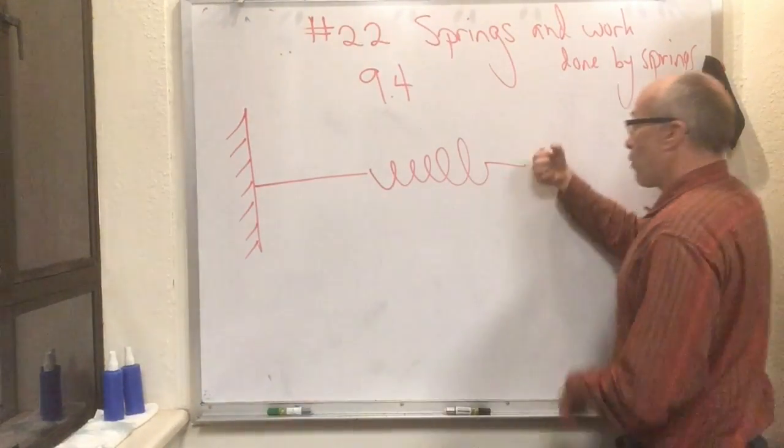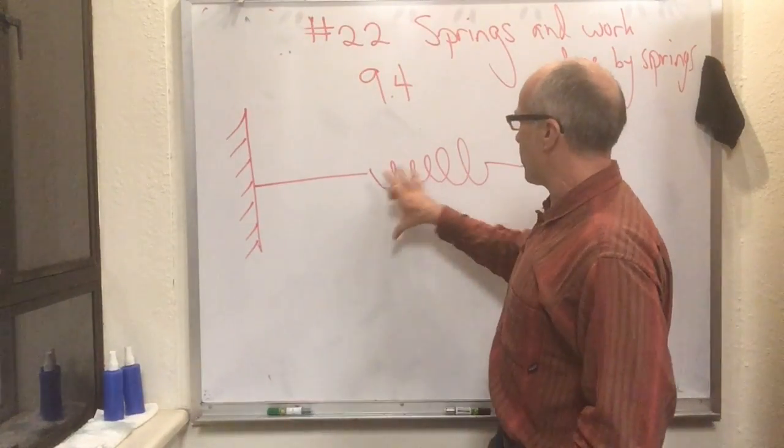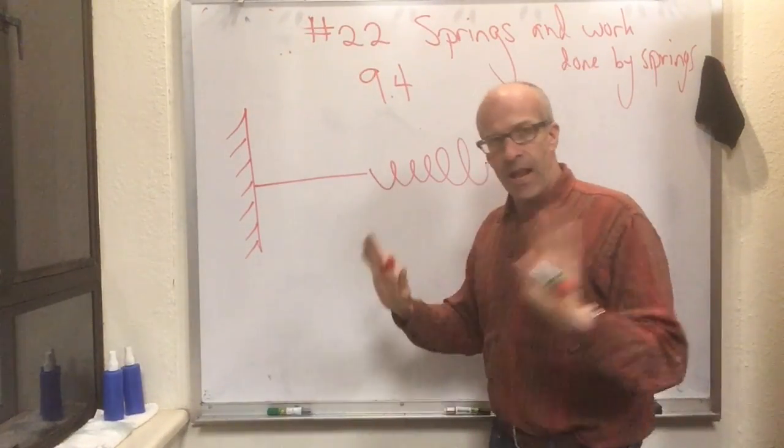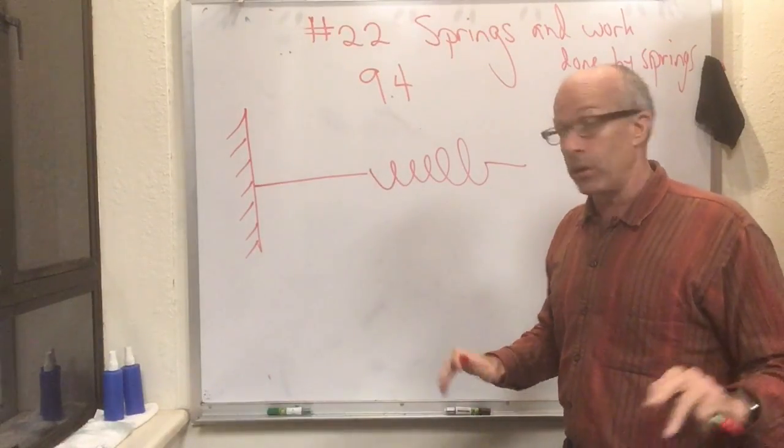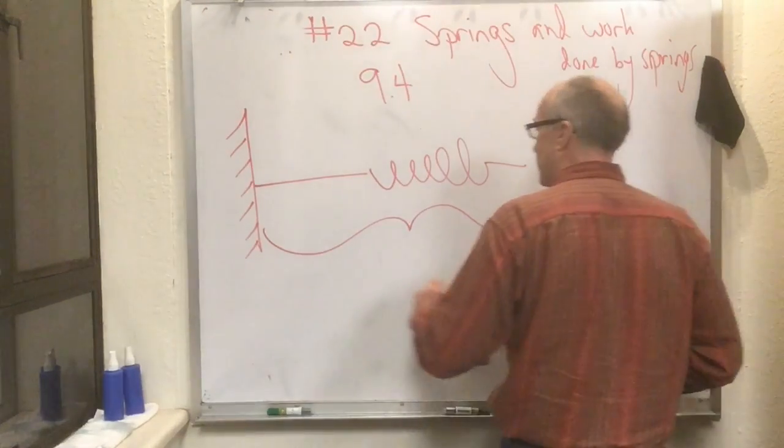The number one thing about a spring is if you just let it go, it has a certain natural length. Let's imagine that this spring has a certain natural length L.